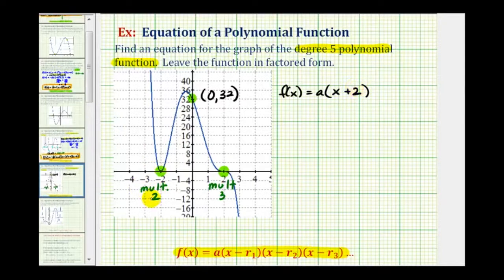But because it has multiplicity two, meaning this is a double zero, we'd actually have two factors of x plus two, or the quantity x plus two squared. The next zero is x equals positive two, which means you must have a factor of x minus two.